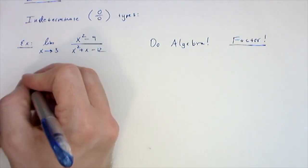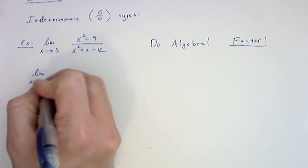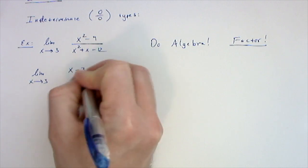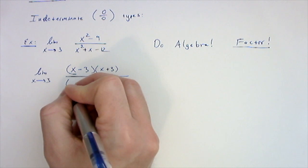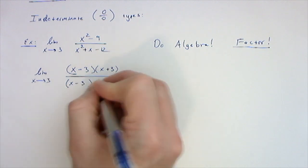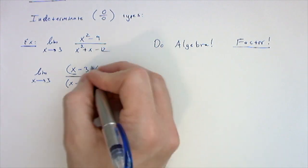I'm going to factor the top and the bottom. This is going to be the limit as x goes to 3. The top factors as x minus 3 times x plus 3. The denominator factors as x minus 3 times x plus 4, and then we can see that those x minus 3s can cancel out.